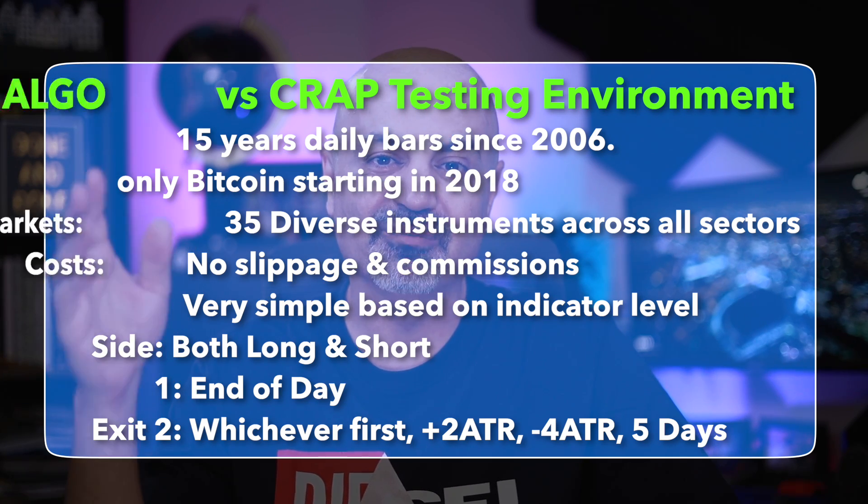The exit also includes a two ATR profit target. This will be aligned with mean reversion strategies because we are making the profit target short and the stop loss a little bit further away. This will be our standard setup for all the coming indicators that I will be testing in this series. Now, starting with the RSI, let's have a look.